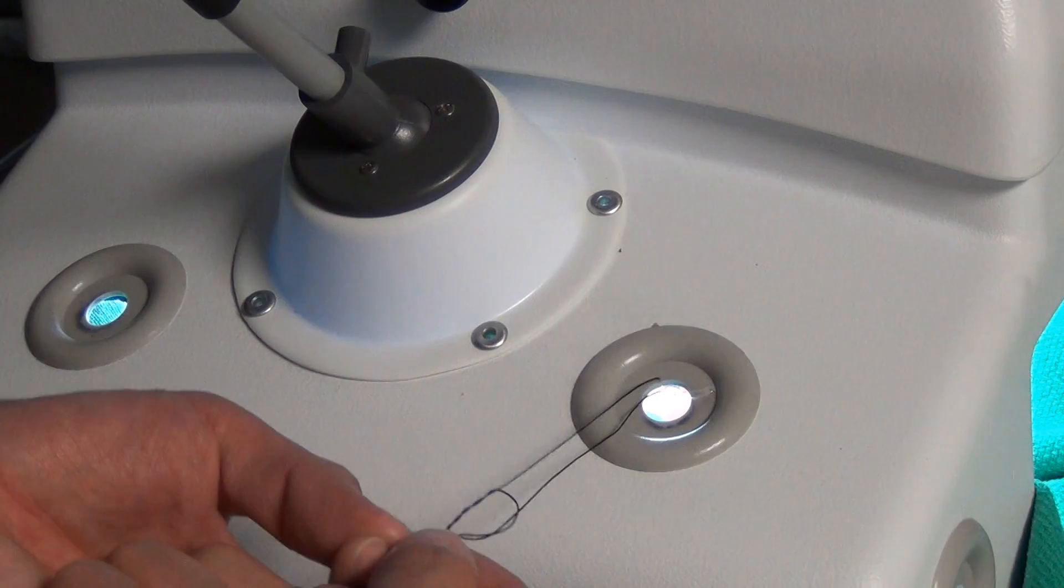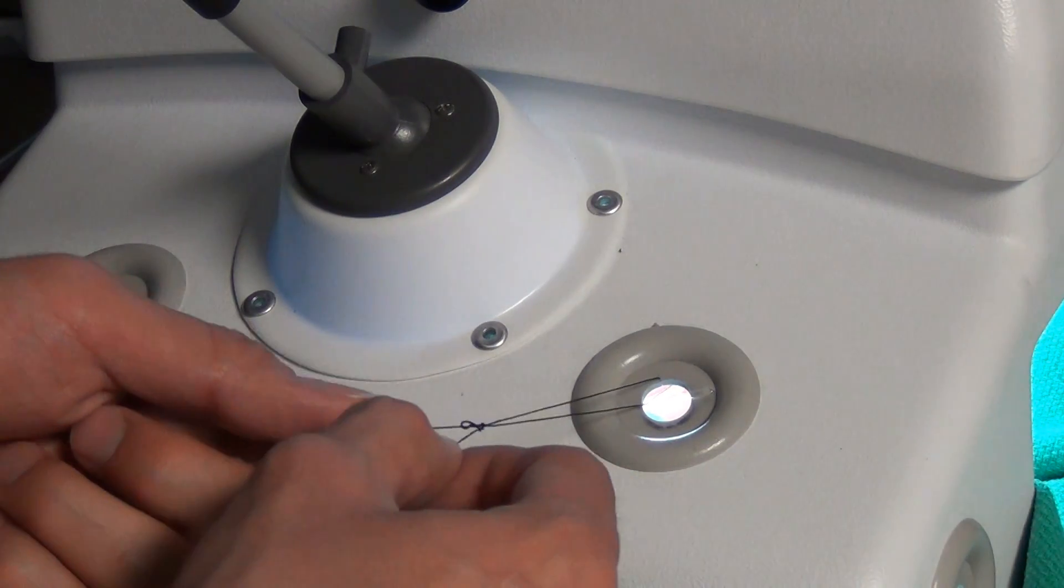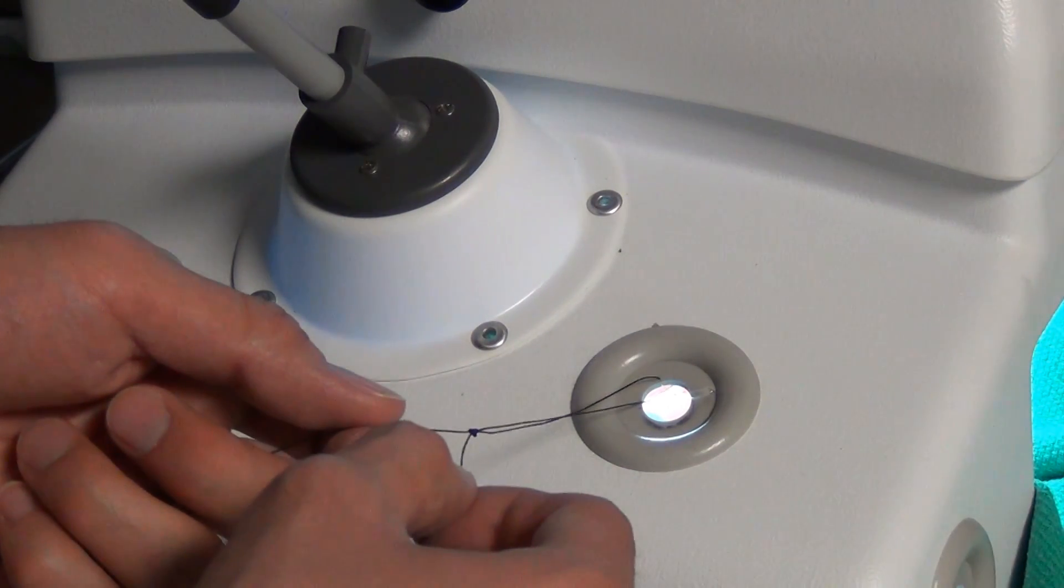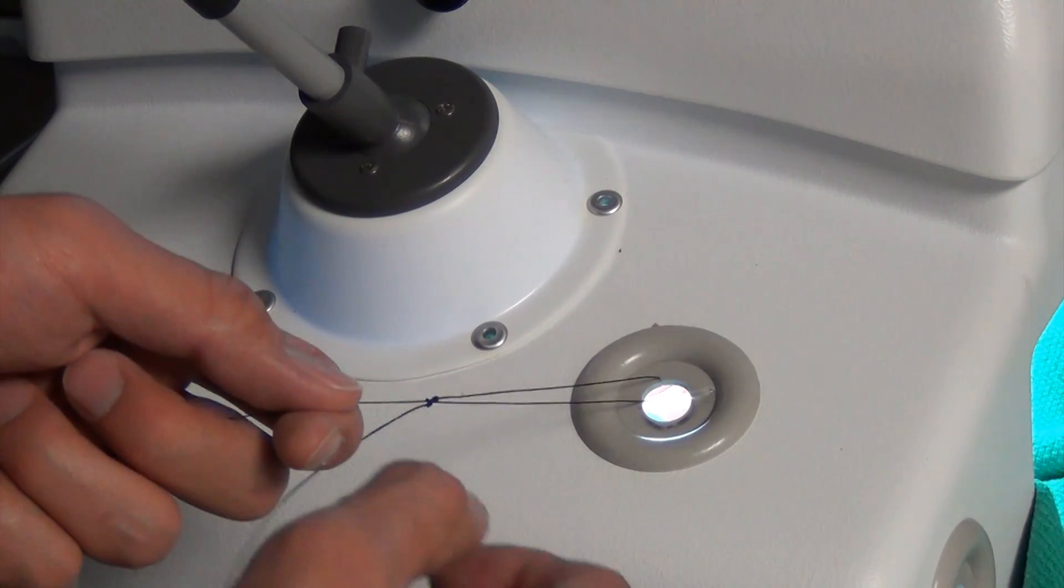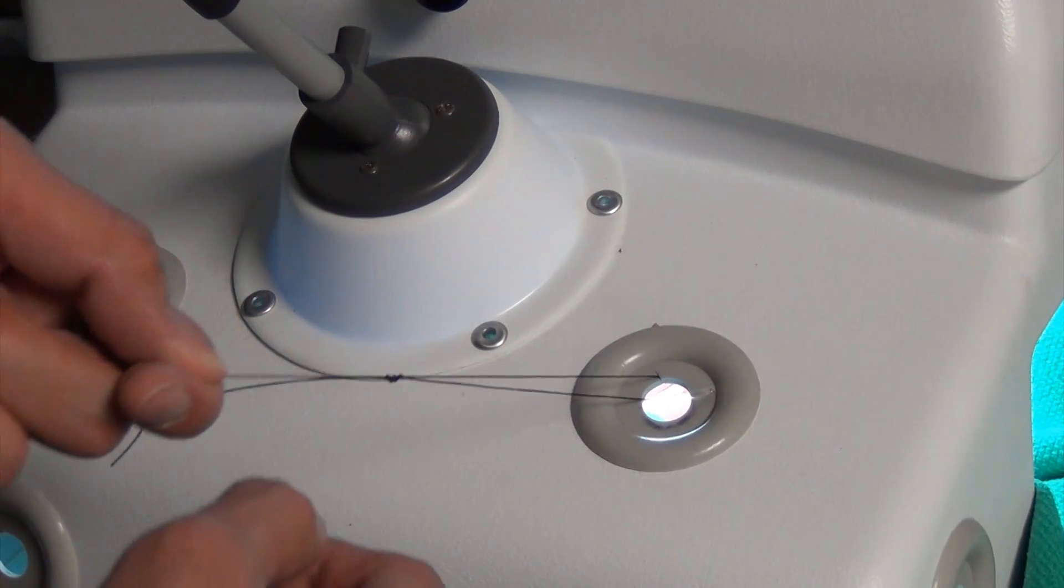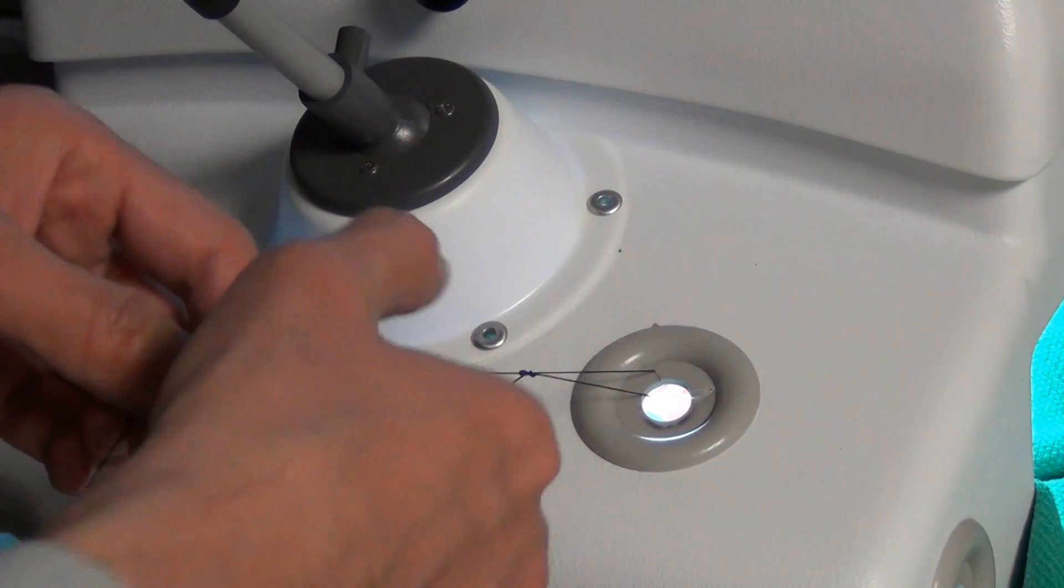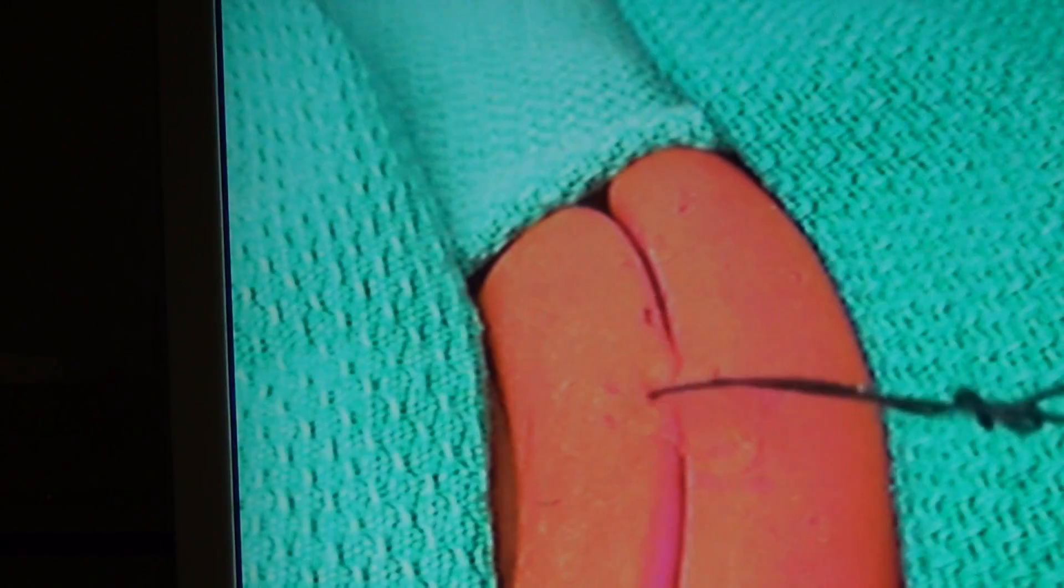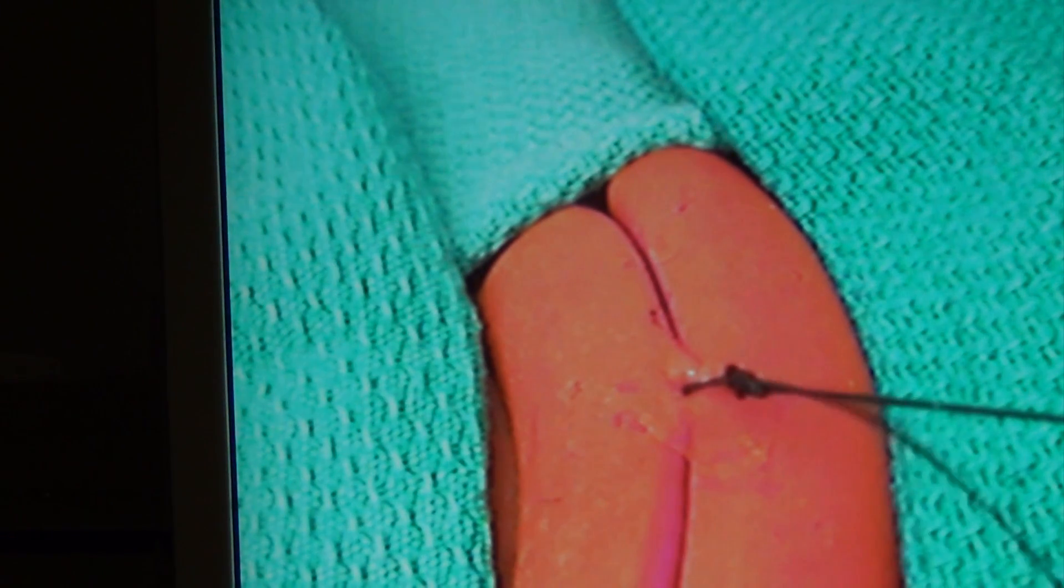Pull on the tail end of the suture to tighten the knot. Water can be dripped on the suture to lubricate and facilitate sliding the knot intracorporeally. Pull on the needle end of the suture to bring the knot close to the tissue. Pull and tighten the knot over the tissue.